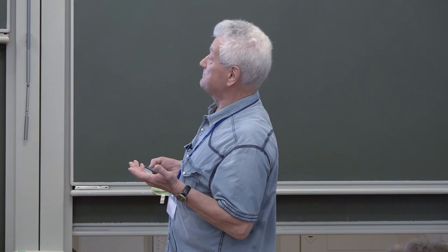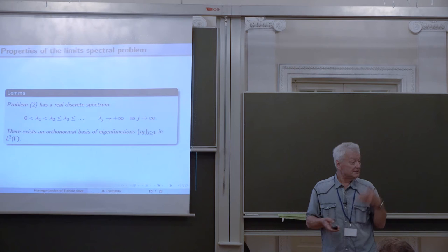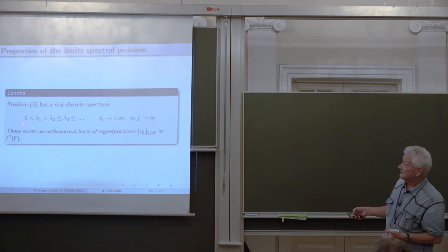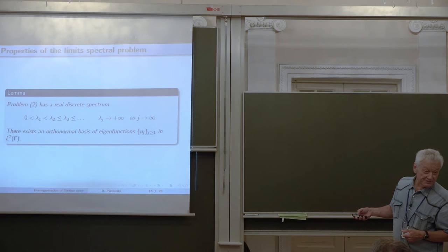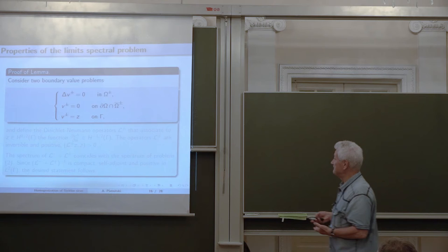We should ask whether this problem is well posed. We can show it is self-adjoint, well posed, its operator is positive definite, and its spectrum has the same structure as the original one but no longer depends on epsilon. All eigenvalues are positive, the first is simple, and they tend to plus infinity as j goes to infinity. So this is the candidate to be the limit spectral problem.